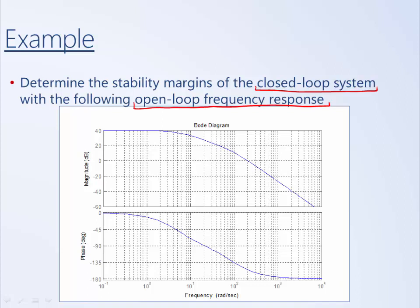First we're going to attempt to estimate the phase margin. The way we estimate phase margin is we look at the gain crossover frequency — where the magnitude plot crosses zero decibels.